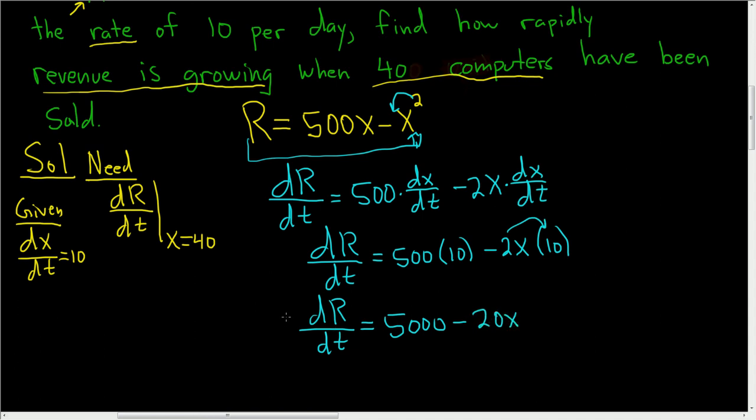And this is how fast the revenue is changing with respect to time. We want to know how fast it's changing when 40 computers have been sold, so when X is 40.